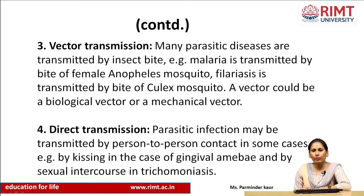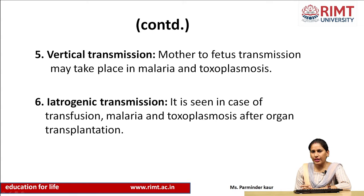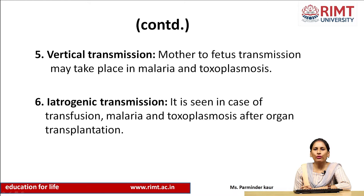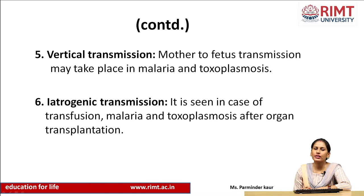Direct transmission — parasitic infections may be transmitted person to person, for example by kissing in the case of gingival amoeba, and by sexual intercourse in the case of Trichomonas vaginalis. Vertical transmission — mother to fetus transmission may take place in malaria and toxoplasmosis, meaning these infections can be transmitted to the fetus from its mother during birth. Iatrogenic transmission is seen in transfusion malaria and toxoplasmosis after organ transplantation — if a donor has these infections, the receiver will get the infection after organ transplantation.